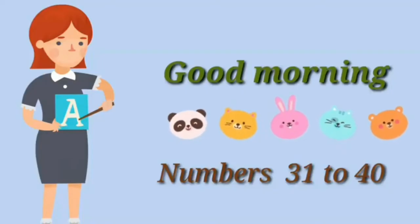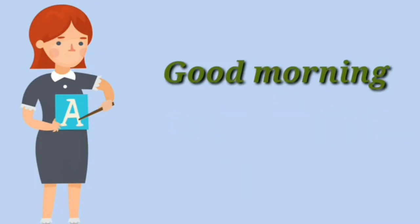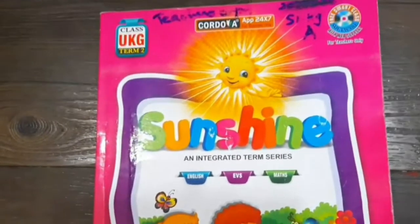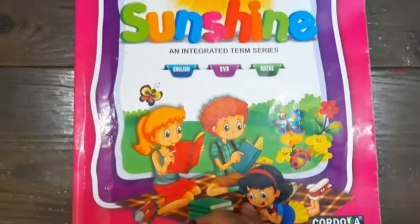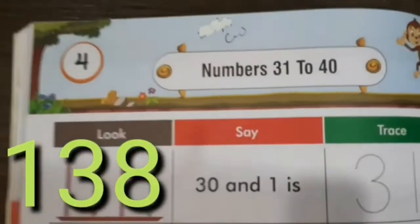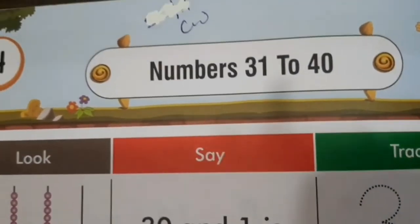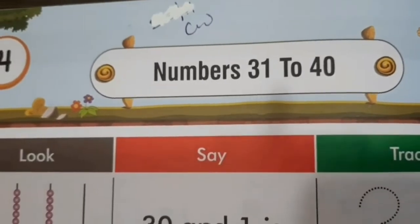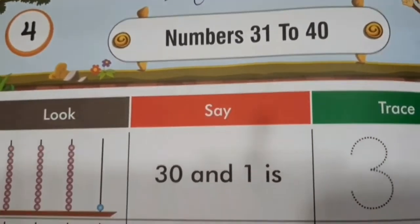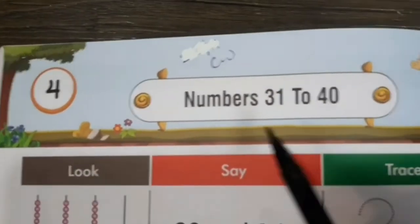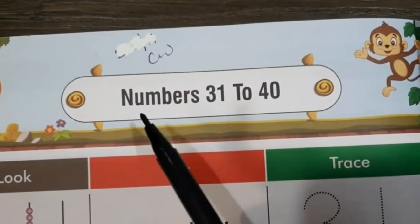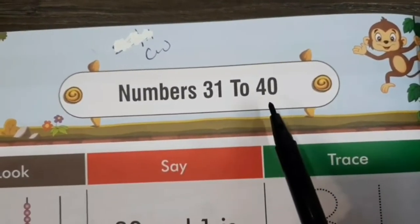Good morning, children. Let's learn numbers 31 to 40. Children, take out your sunshine book and open to page number 138. Today, we will be revising numbers 31 to 40. So, children, are you ready with your pencils? Okay, so now we will be revising numbers 31 to 40.